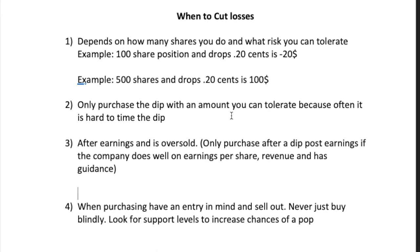An extra tip on rule three: after earnings, if a stock is oversold like Zoom, I try to stay away from buying the dip if the company is not doing well — no revenue, no guidance, not making money. I just stay away because it's likely to keep going down. I like Zoom as an example because it beat earnings per share this quarter and has great revenue — it's just that guidance didn't meet Wall Street expectations, so it's been going down more.